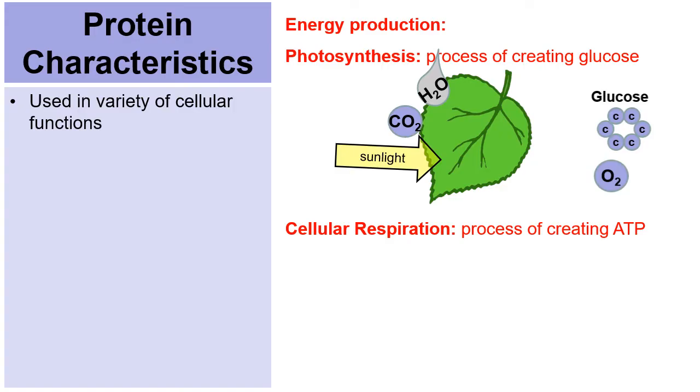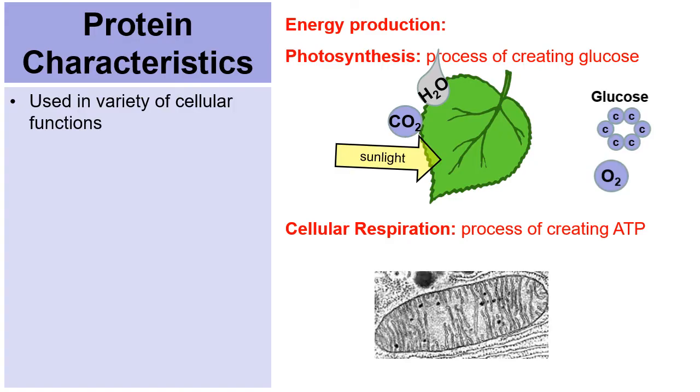Same in cellular respiration, the process of making ATP. Here's a mitochondria. The mitochondria will take in glucose and take in oxygen. And through cellular respiration creates ATP and water and carbon dioxide. None of these are proteins, but proteins are used along the way.